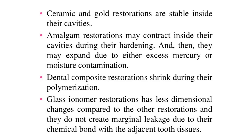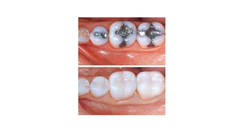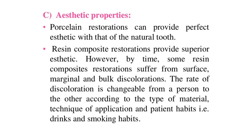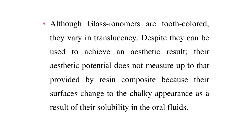Regarding aesthetic properties, porcelain restorations can provide perfect aesthetics matching the natural tooth. Resin composite restorations provide superior aesthetics. However, over time some resin composite restorations suffer from surface, marginal, and bulk discolorations. The rate of discoloration varies between patients according to the type of material, technique of application, and patient habits such as drinking and smoking. Although glass ionomers are tooth-colored, they vary in translucency and their aesthetic potential does not match that of resin composite, as their surfaces develop a chalky appearance due to solubility in oral fluids. Both gold and amalgam restorations have poor aesthetics due to their metallic colors, although a few patients — most probably technicians and butchers — enjoy this metallic appearance.